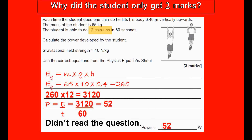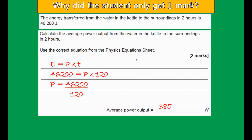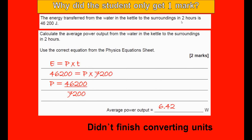Why did the student only get one mark? A kettle transfers 46,200 joules to surroundings in two hours; calculate average power. The equation is correct, but the student didn't fully convert two hours into seconds. Multiply two by 60, then by 60 again to get 7,200 seconds. Don't just convert to minutes — convert all the way to seconds.